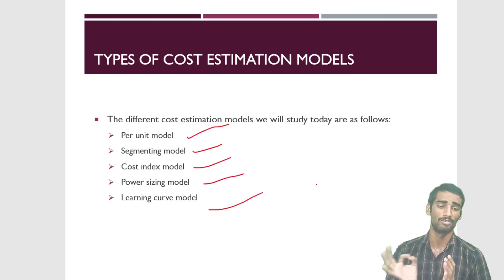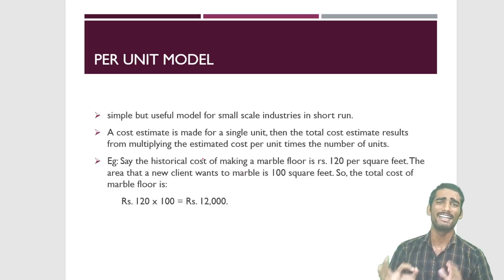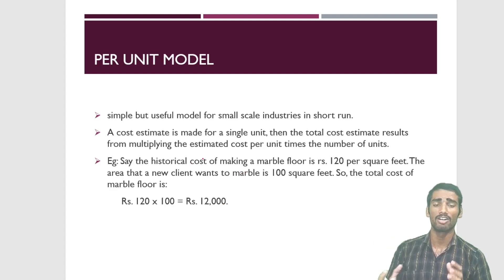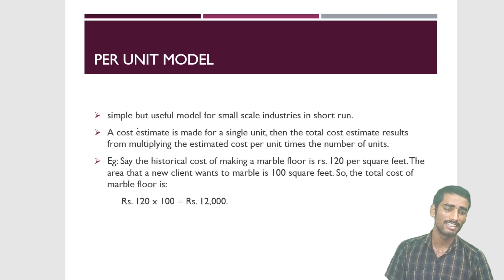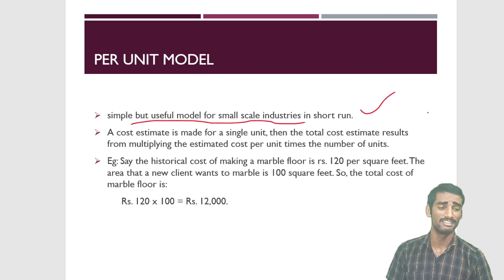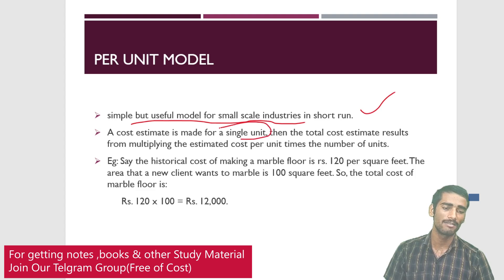Let us come to the per unit model. It is clear from the word itself — in this model we basically try to estimate the cost of a single unit, and after that we multiply that with the total number of units to be purchased. This is a simple but useful model for small scale industry — cottage industry or small manufacturing. They estimate the cost for a single unit and then multiply the estimated cost per unit by the number of units.